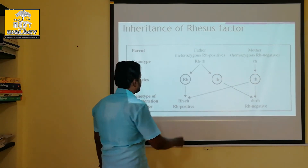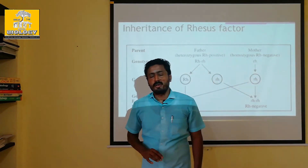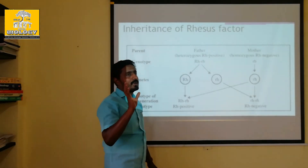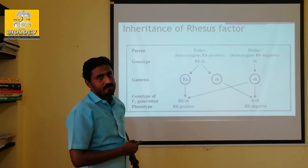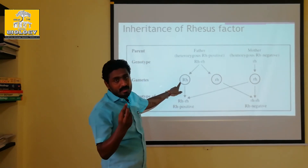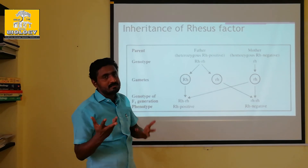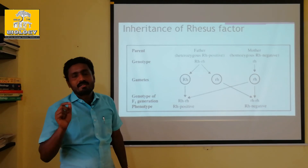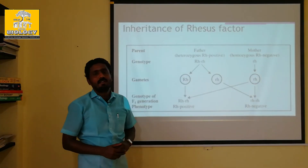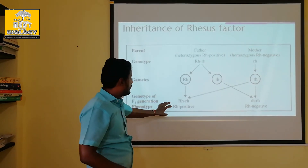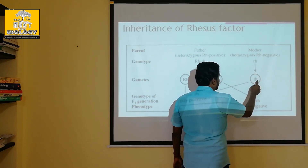In the case of the mother, the genotype is small r, small r — she is RH negative. In the sperm, the father contributes capital R, and the mother contributes small r. When these fuse, the fetus becomes capital R, small r — that is RH positive. So the fetus in the uterus is RH positive, while the mother is RH negative.